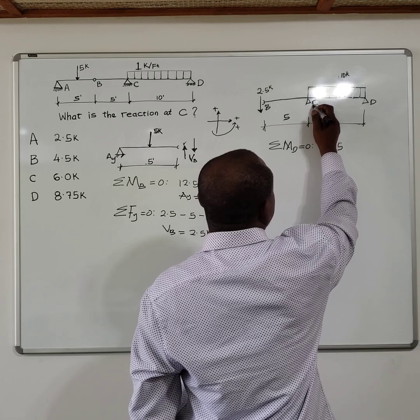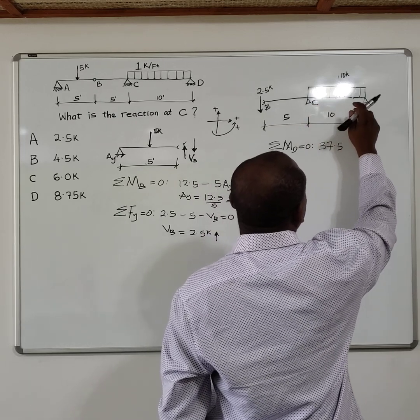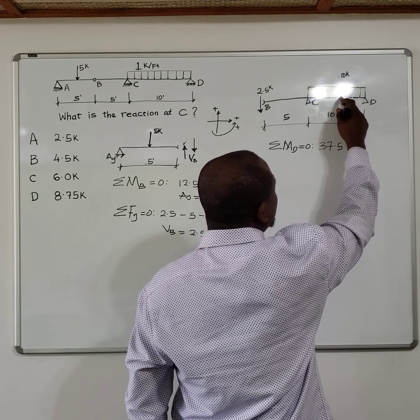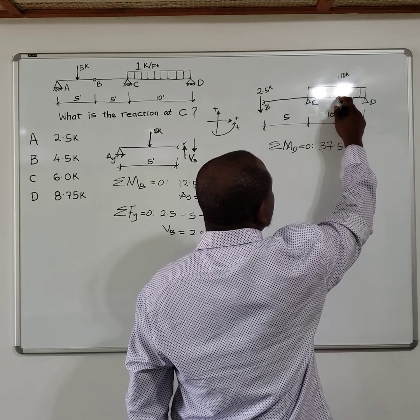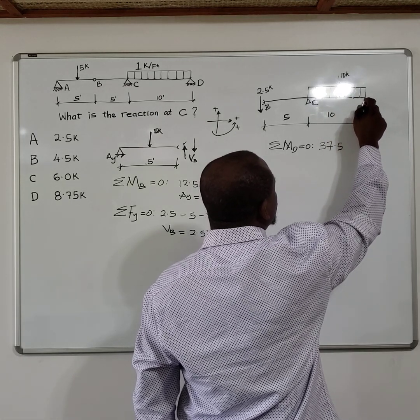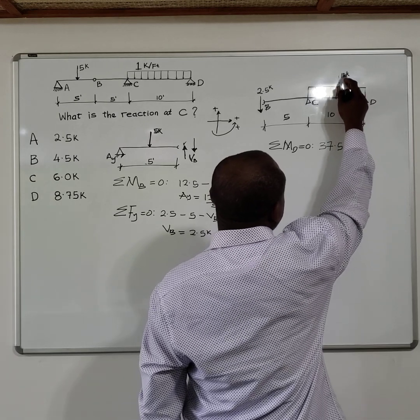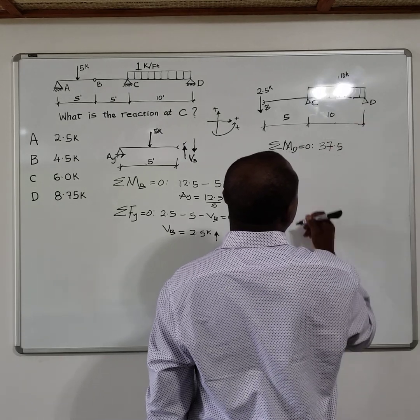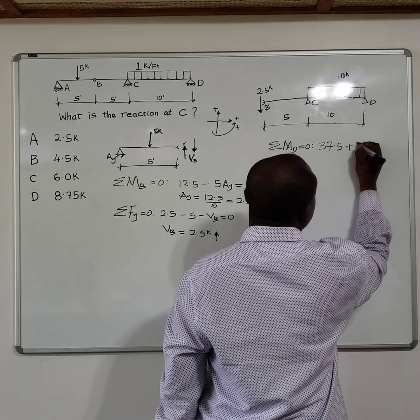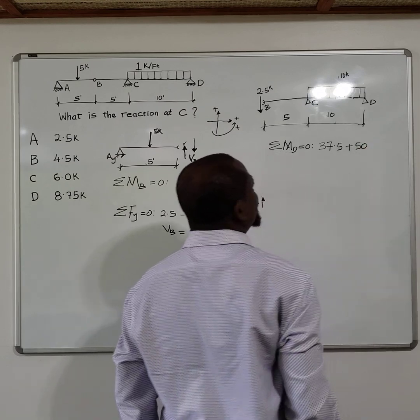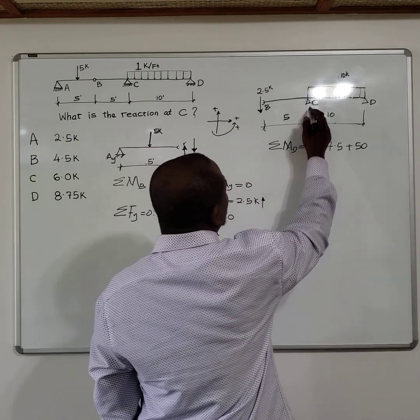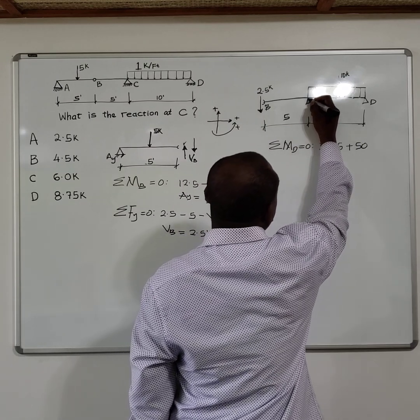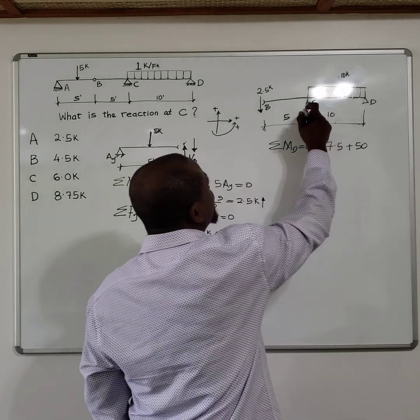All right, now we are interested in the reaction at C, so we have that. And then here we have the 10 kip, so that 10 kip will create also a positive moment around point D. And that's 10 kip multiplied by half of this length, which is 5 feet, that will be 10 multiplied by 5, that will give us 50, that's 50 kip-foot. And then the point of our interest, point C, the reaction at C will be this reaction here where we assume is going up.